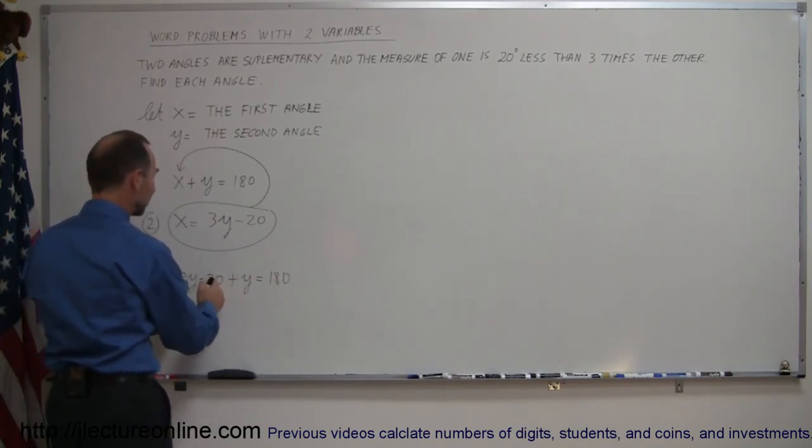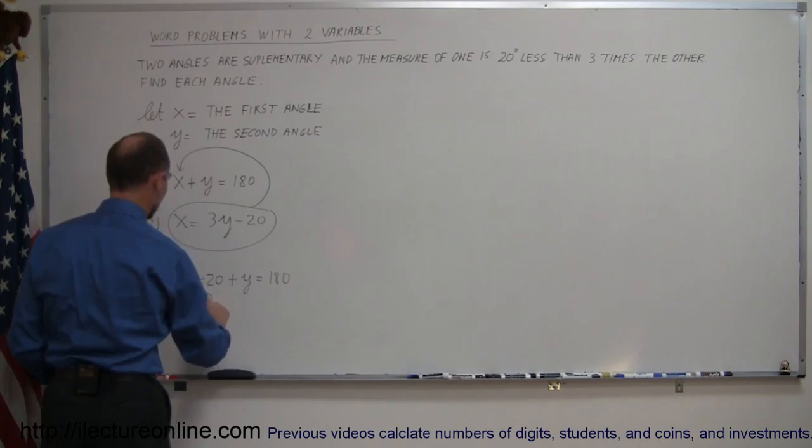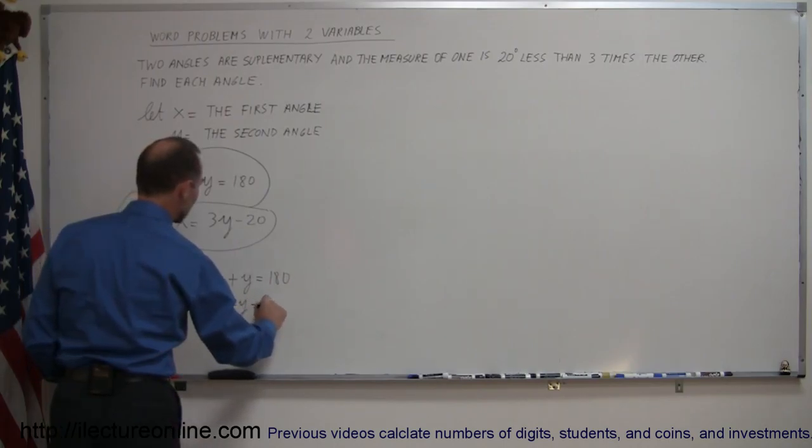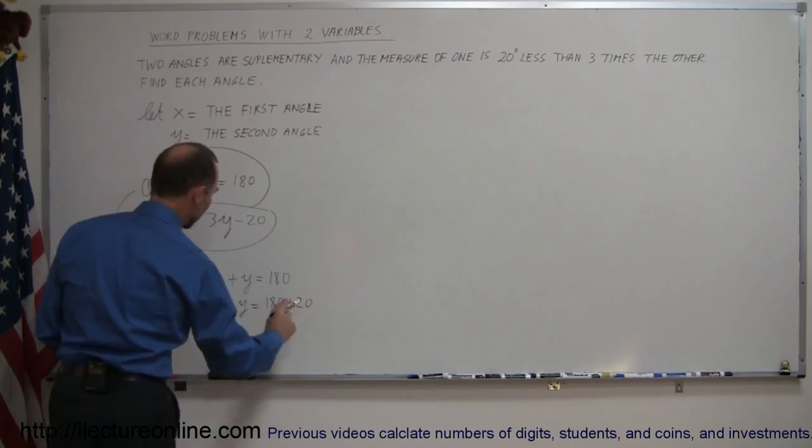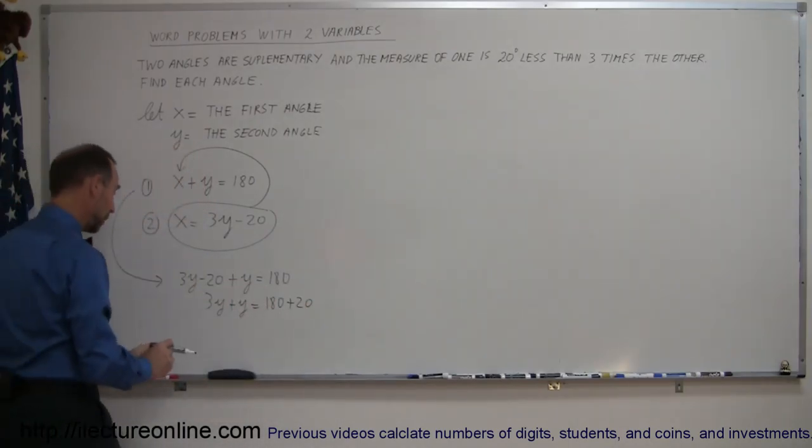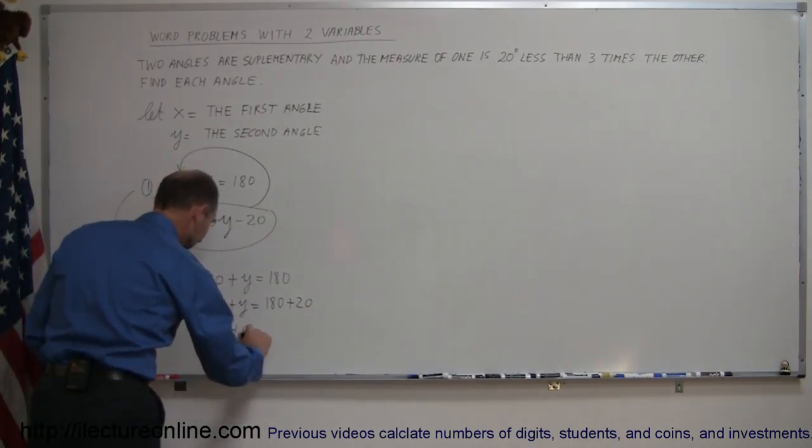I keep all the y's on one side, all the numbers on the other side. So 3y plus y equals 180 plus 20. Combining like terms on both sides of the equation, I get 4y equals 200.